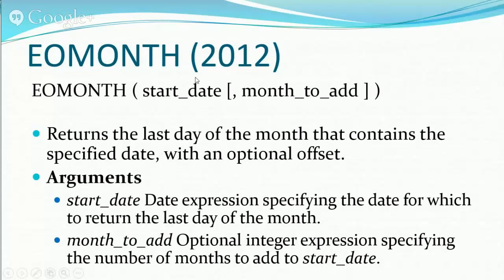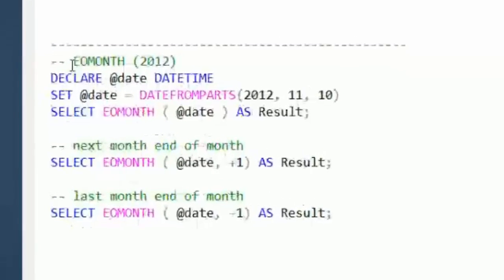So what you do is you use EOMONTH and you pass in a date, or you can add months to it. You can say, give me the end of the month for January plus three, which would be really asking for the end of month for April.